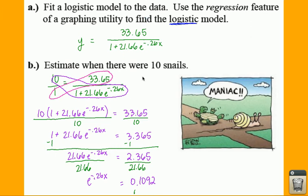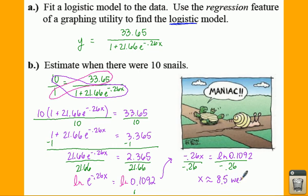Now obviously you have the base e, so you're going to end up with on the left you have negative 0.26x is equal to the natural log of 0.1092. Divide by negative 0.26, and x is equal to approximately 8.5, and we are measuring in weeks.